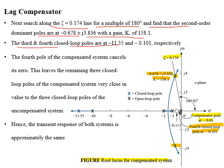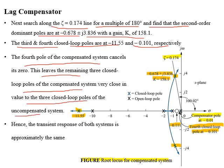The third pole of the closed-loop system is found at −11.55, which is far away from the dominant pair of poles. The fourth pole is found at −0.101, which is near to the compensator zero at −0.111. The fourth pole of the compensated system cancels its zero, and the third pole is far away from the dominant pair. This leaves the remaining closed-loop poles of the compensated system very close in value to those of the uncompensated system, and hence the transient response of both systems are approximately the same.